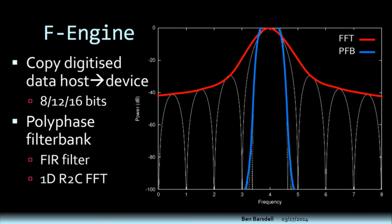The F-engine starts the pipeline by copying digitized data — in our case we're generating fake data, but in theory it would copy raw digitized data from host to device. We're very careful with the number of bits we use because bits are expensive to transfer. In astronomy we tend to be heavily noise-dominated, so we can get away with quite few bits. The LEDA system uses 8 bits; some use 12; 16 would actually be quite high. Then we apply the polyphase filter bank, which is just a finite impulse response filter, followed by a batched 1D real-to-complex FFT. This diagram shows the difference in frequency response — this is why we use a polyphase filter bank instead of a straight FFT. You get much better isolation of each channel: the blue curve shows a nicely contained signal, as opposed to the spectral leakage wings that come out of the plain FFT.